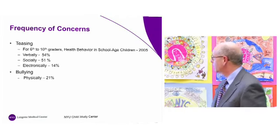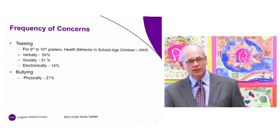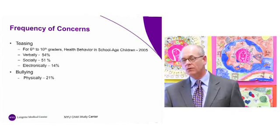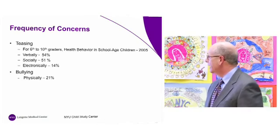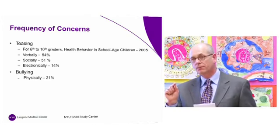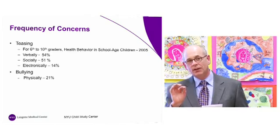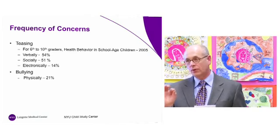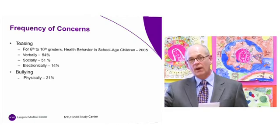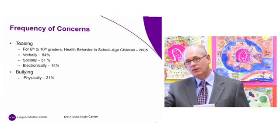The frequencies of concern come from the Health Behavior in School-Age Children study of 2005, which primarily focuses on secondary school kids. These statistics are probably at the high level. Looking across grade levels, there is not a lot of teasing in kindergarten through third grade. It begins to increase in fourth grade, more in fifth grade, and gets very high in sixth and seventh grade. It begins to diminish again in eighth grade, then goes down through high school.